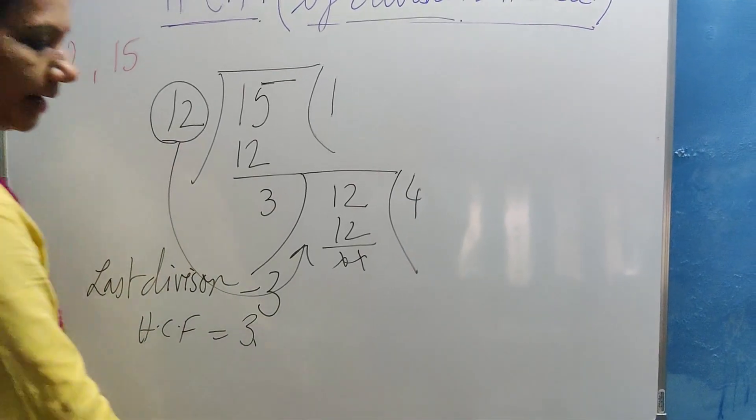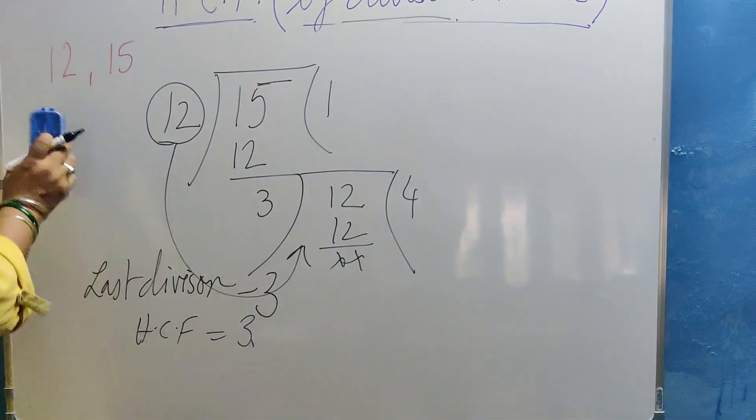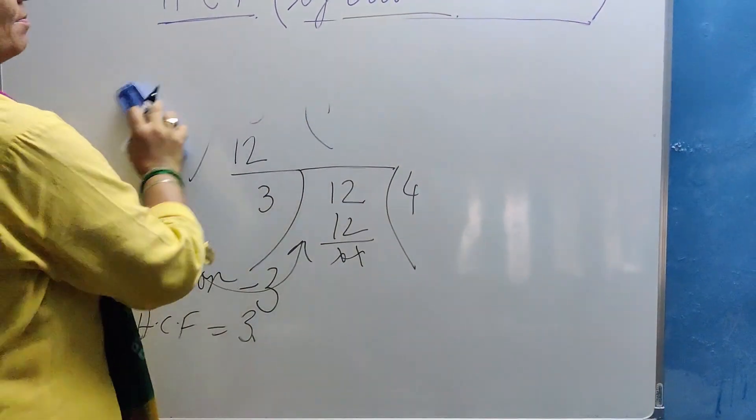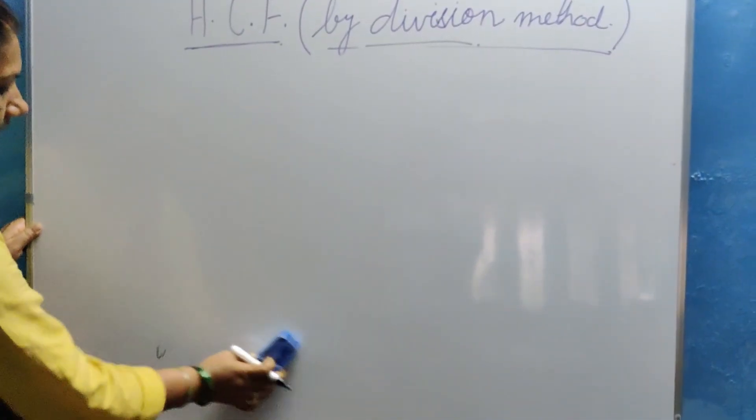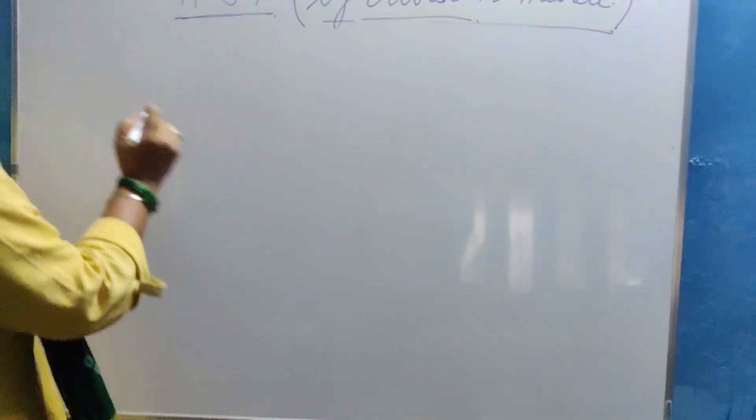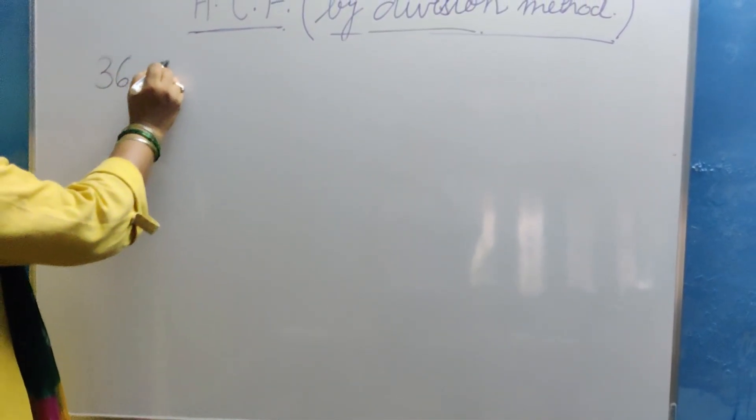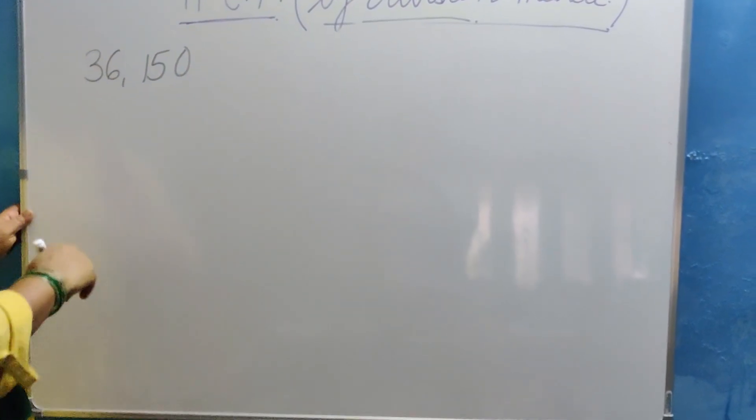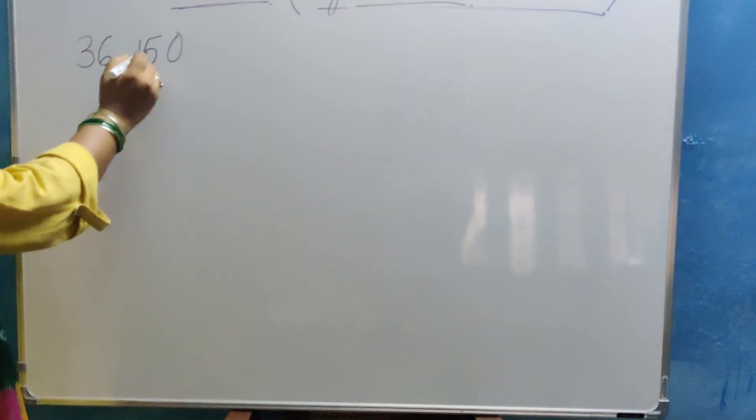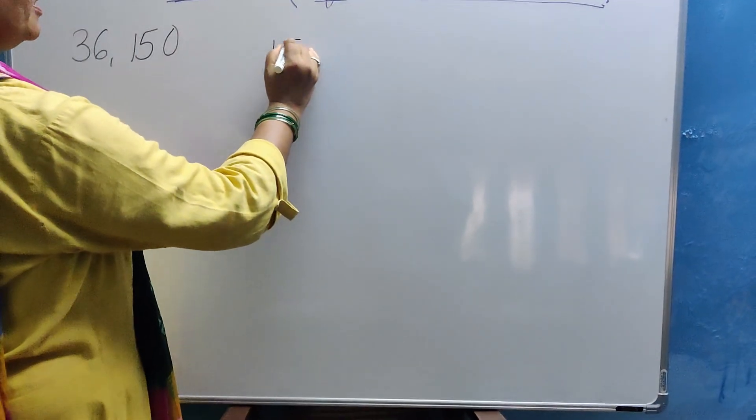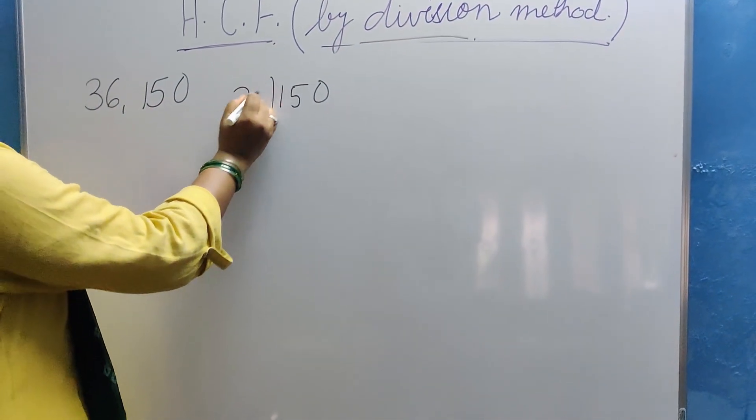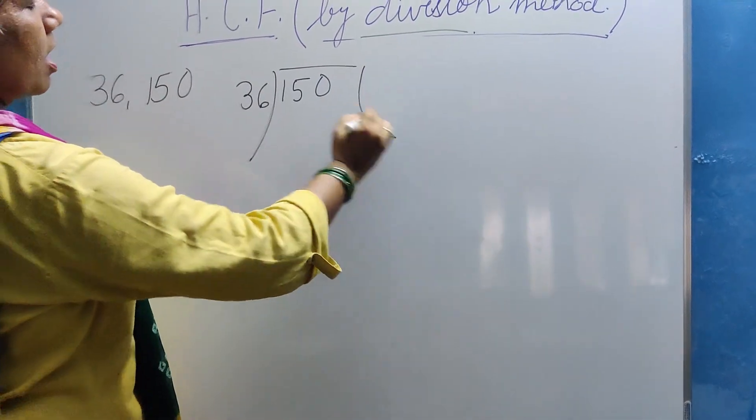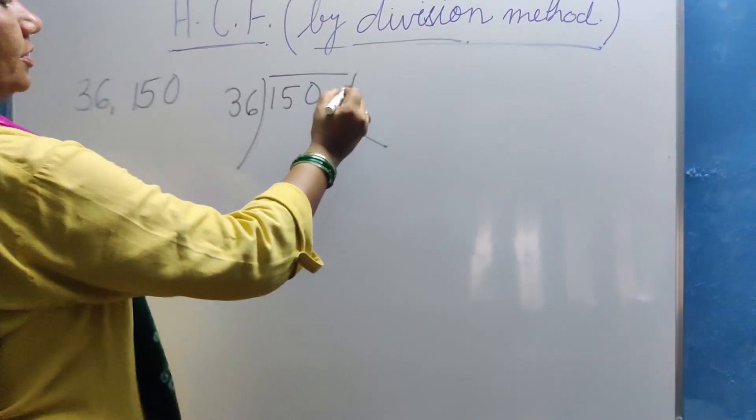Let us take one more example and see how we are getting the HCF by division method. Let me take one more example. Let the example be 36 and 150. Now which is bigger among these? 150. So we take 150 here and we start dividing it by 36. Now how many times will it go? Three times.